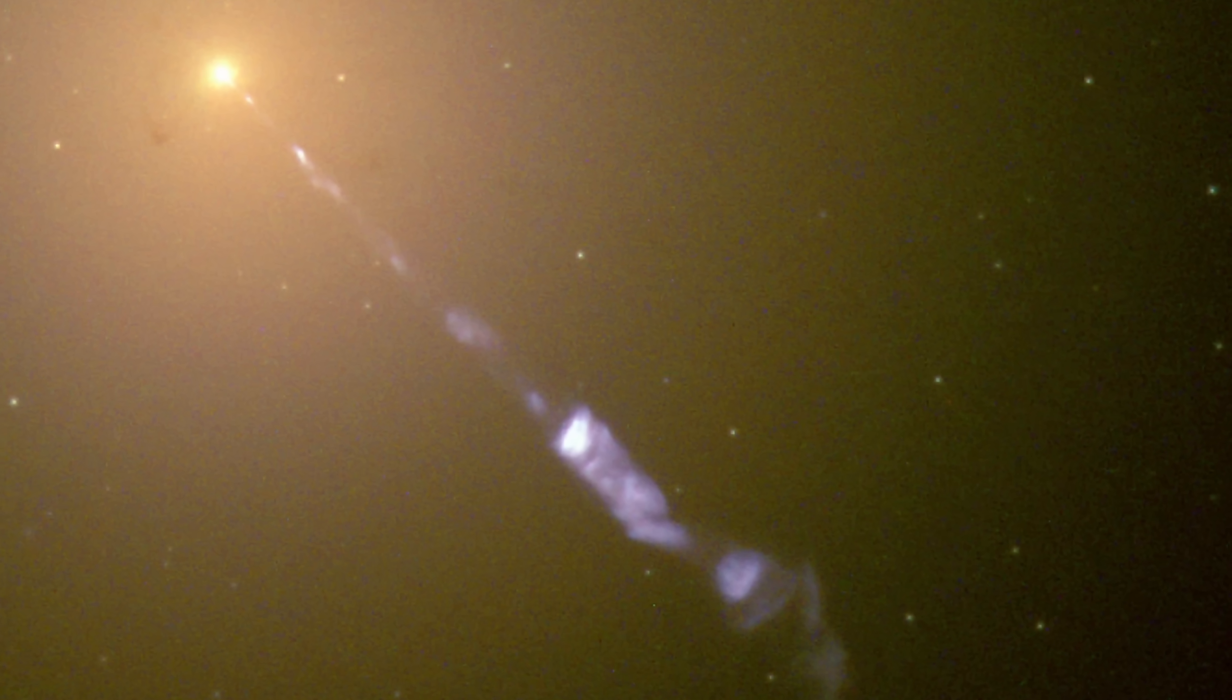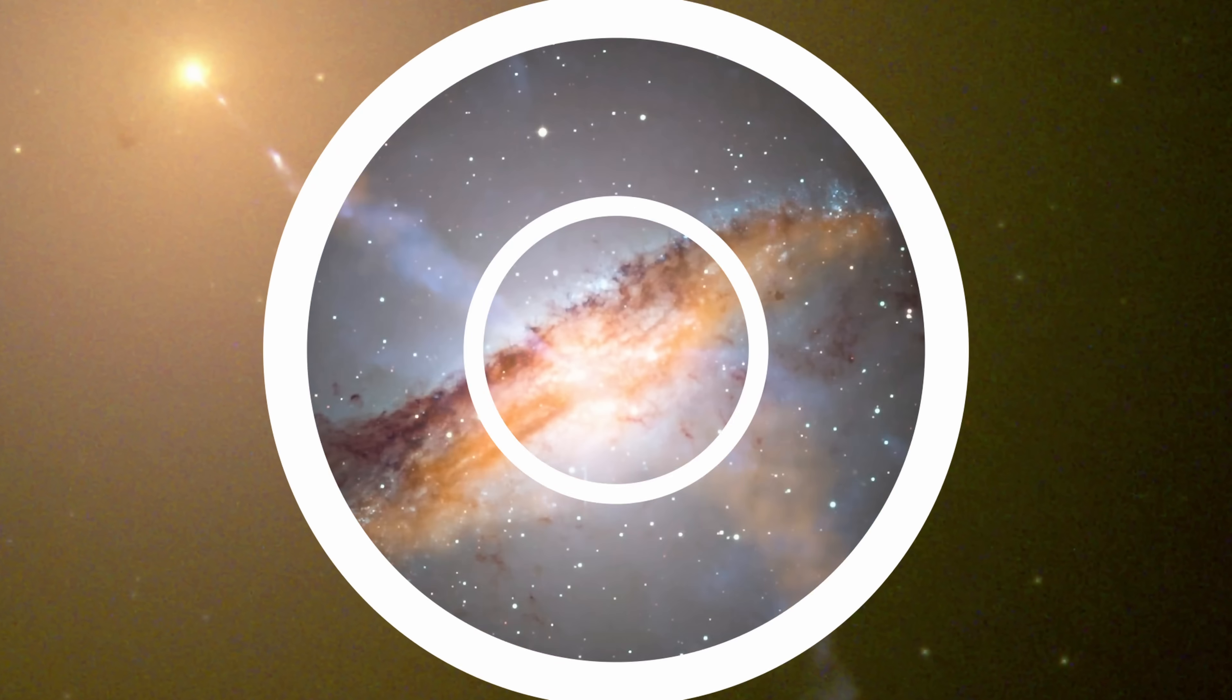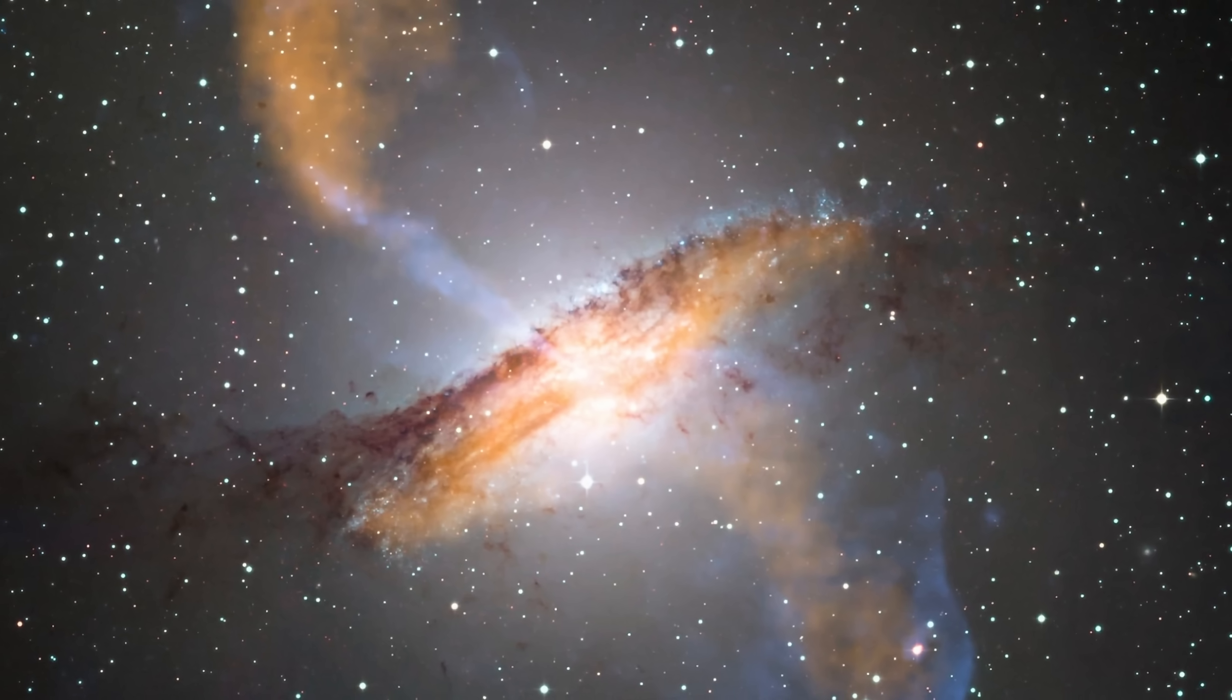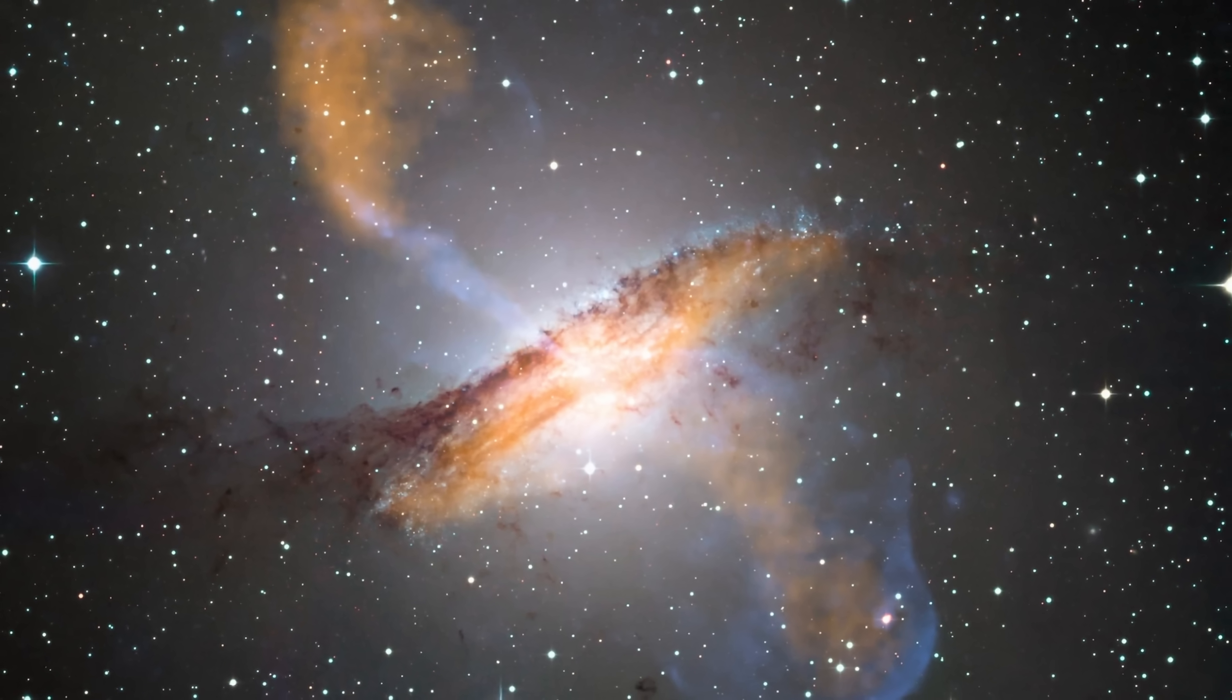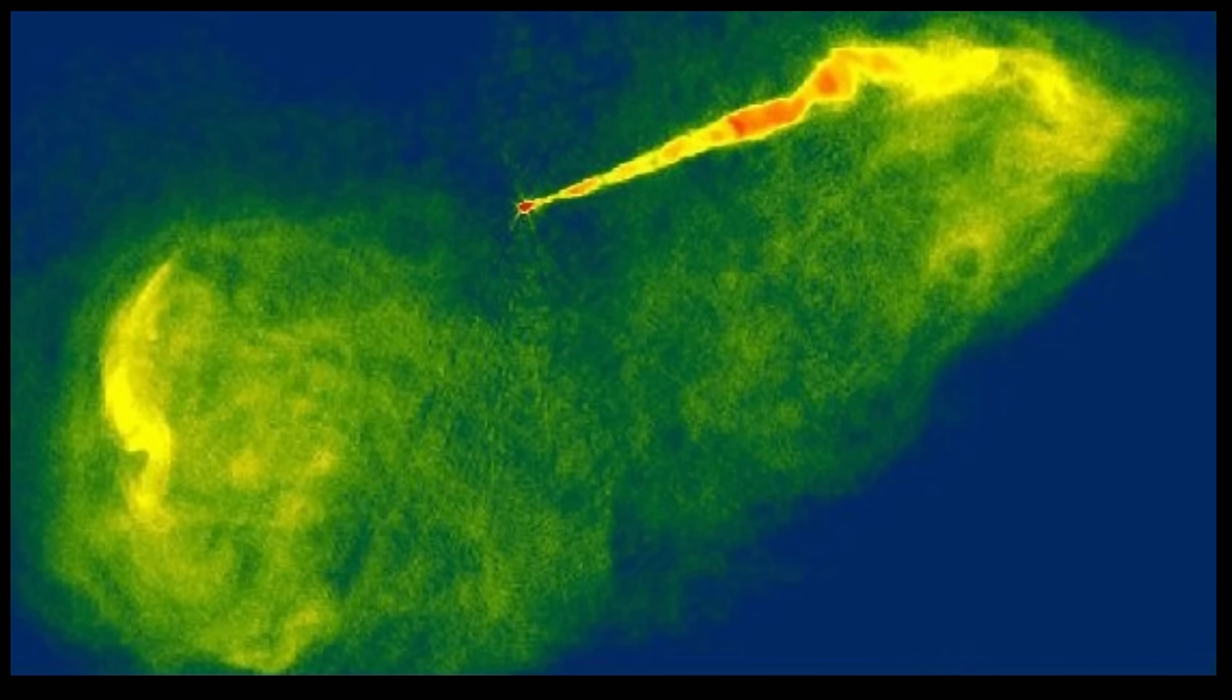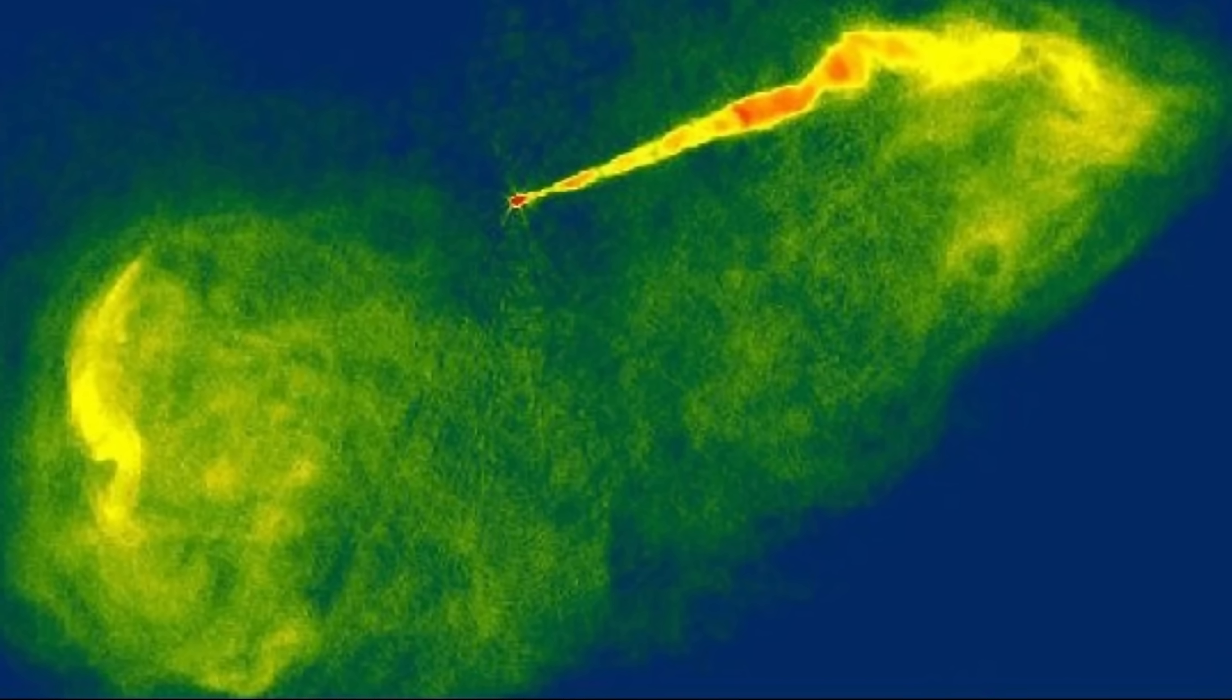The phenomenon we sometimes refer to as the astrophysical jet, or the black hole jet, which is normally a bipolar structure emitted by various black holes in two directions for reasons that are still not entirely clear.